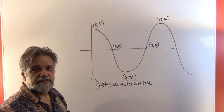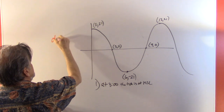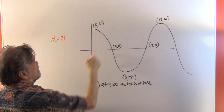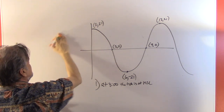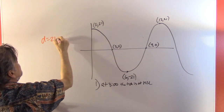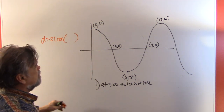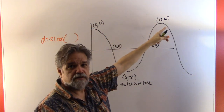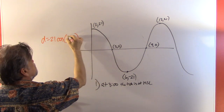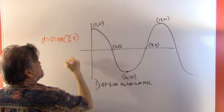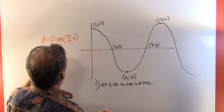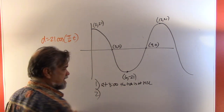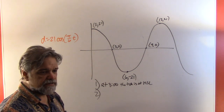Our equation is d = 21 cos((π/6)t). The amplitude is 21, it starts at maximum so it's a cosine (not negative), the period is 12 so b = 2π/12 = π/6, and there's no vertical shift since mean sea level is zero.